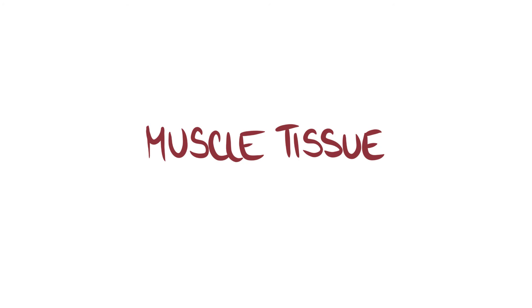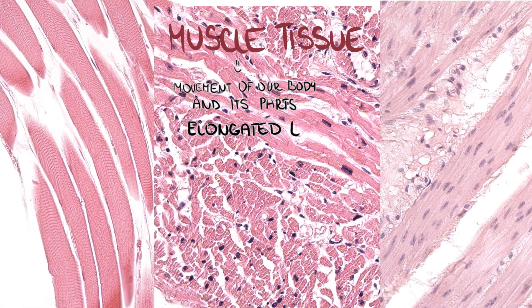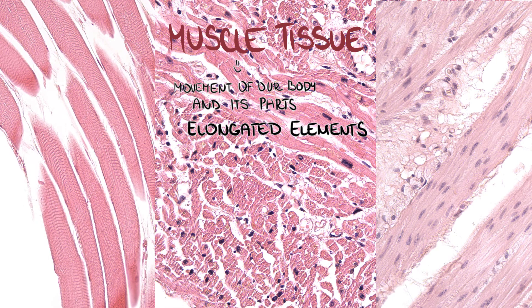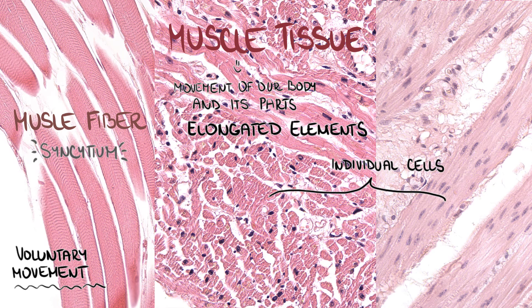Let's sum it all up. Muscle tissue is responsible for the movement of the body or its parts. It's composed of elongated elements. In the case of skeletal muscle it's a muscle fiber, which is a syncytium. Cardiac and smooth muscle tissue is made up of individual cells with intercellular contacts. Voluntary movement is a feature of exclusively skeletal muscle — the other two types cannot be controlled by will. Striations are visible in muscle elements which contain myofibrils.